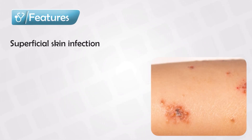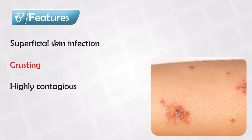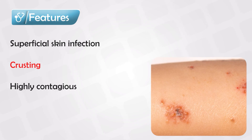Impetigo is an infection in the most superficial skin area, in the epidermis. Because it is very superficial, it produces pus that is out in the skin and this dries out very quickly, forming a lesion that we call crust. The honey-colored crusting is a hallmark of impetigo.